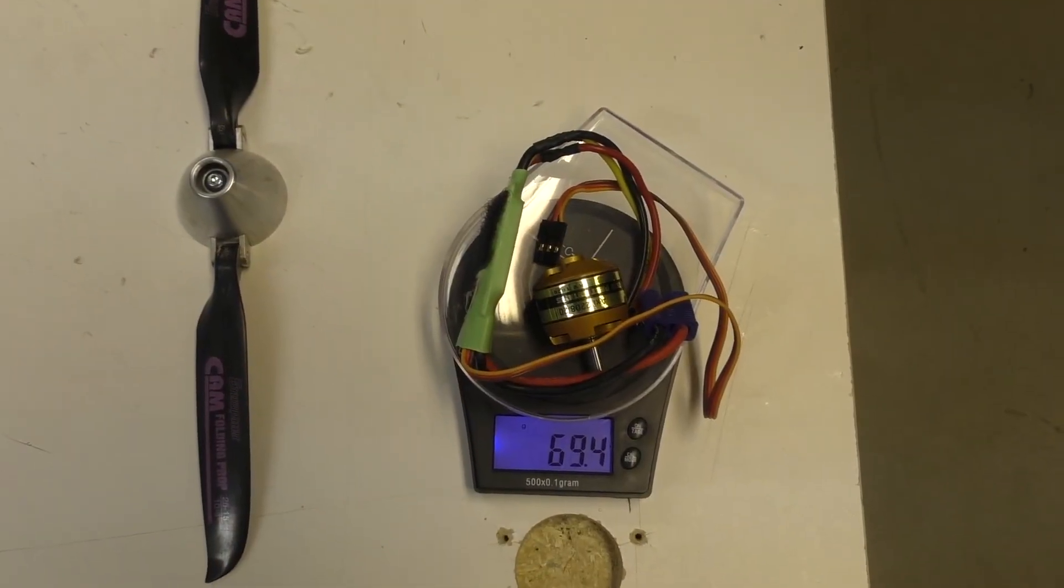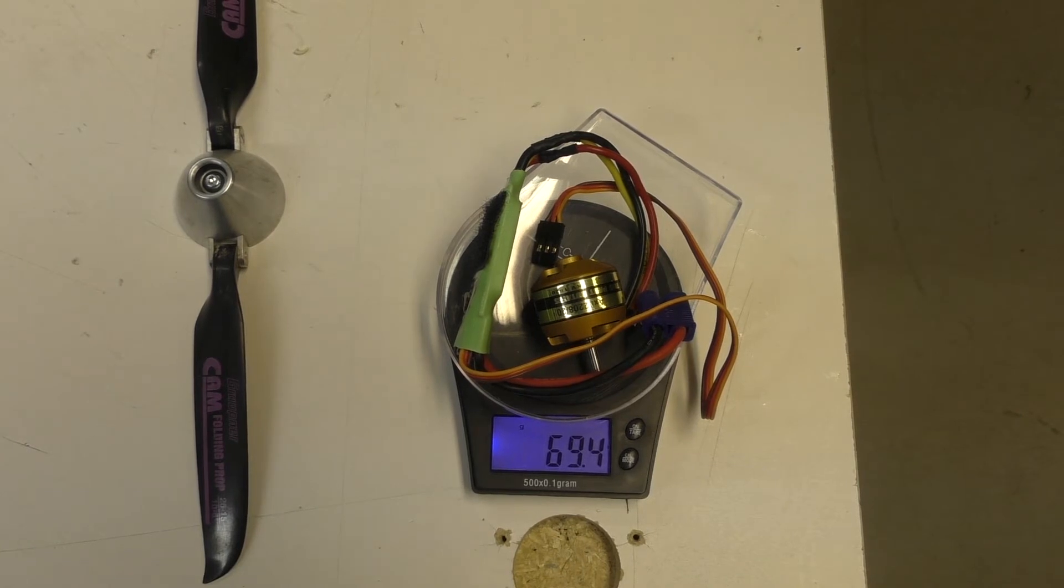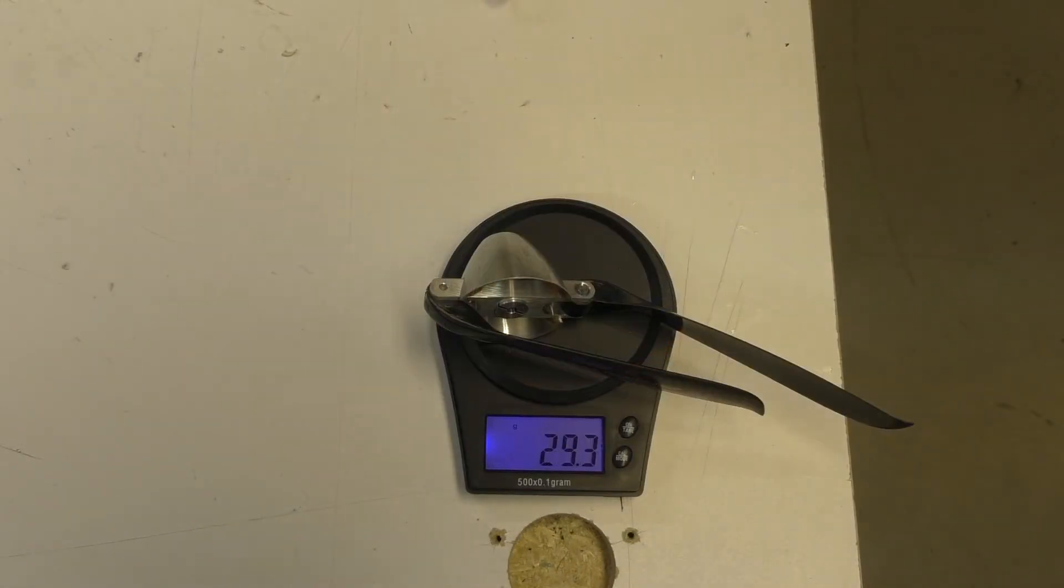So I have 69.4 grams for the motor and the 30 amp Multistar ESC. 29.3 grams for the spinner and the blades.